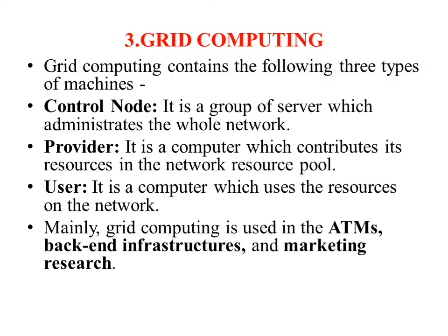Grid computing contains three types of machines. Control nodes are a group of servers which administrate the whole network. A provider is a computer which contributes its resources to the network resource pool. A user can access and use the resources on the network. Grid computing is mainly used in ATMs, back-end infrastructure, and marketing research.